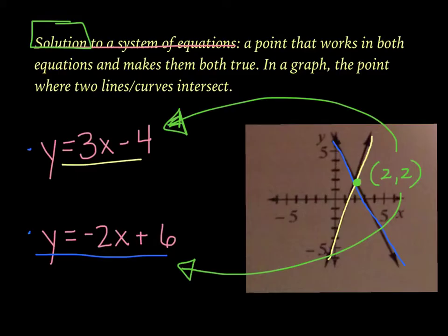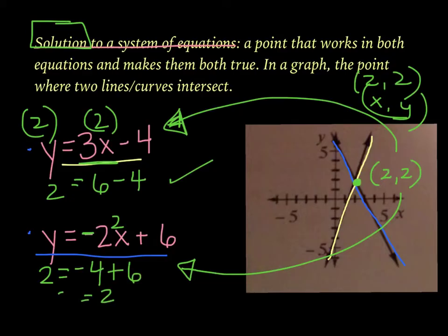I'm going to plug it in. So remember, it's 2, 2, and remember it goes x, y. So I'm going to plug in a 2 for the x and for the y, since it's 2, 2. Let's work it out. So 3 times 2 is 6, minus 4 is 2. So it works in that one. Let's try this one. So negative 2 times 2 is negative 4 plus 6, that is 2. So a solution to two systems of equation is a point that works in both of them.